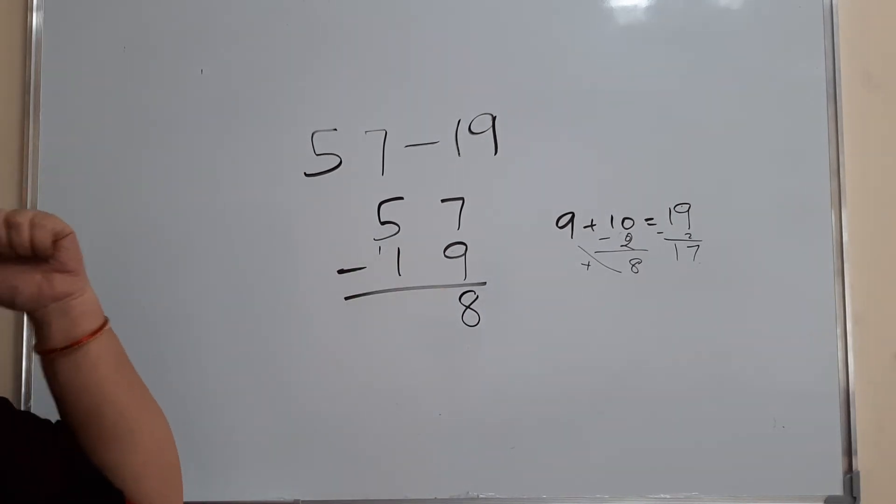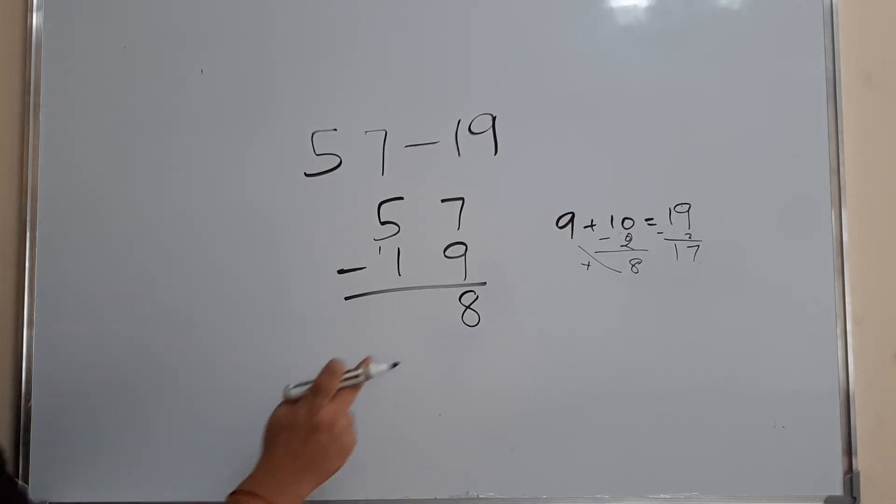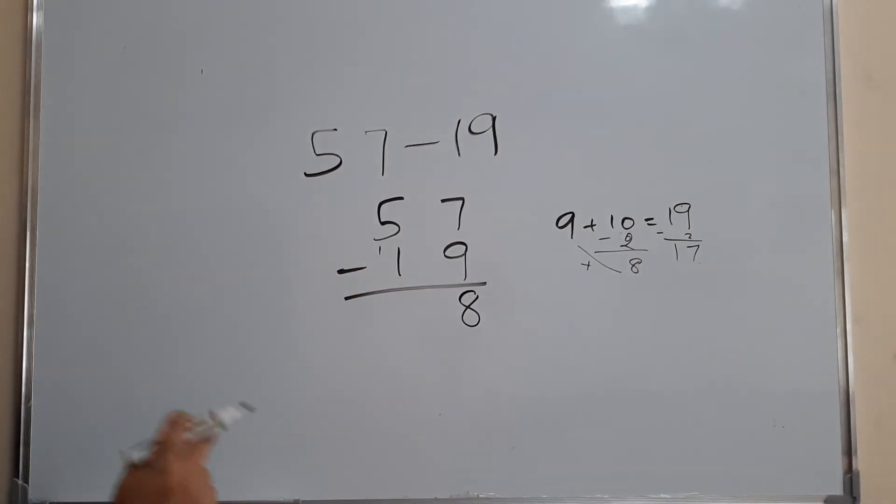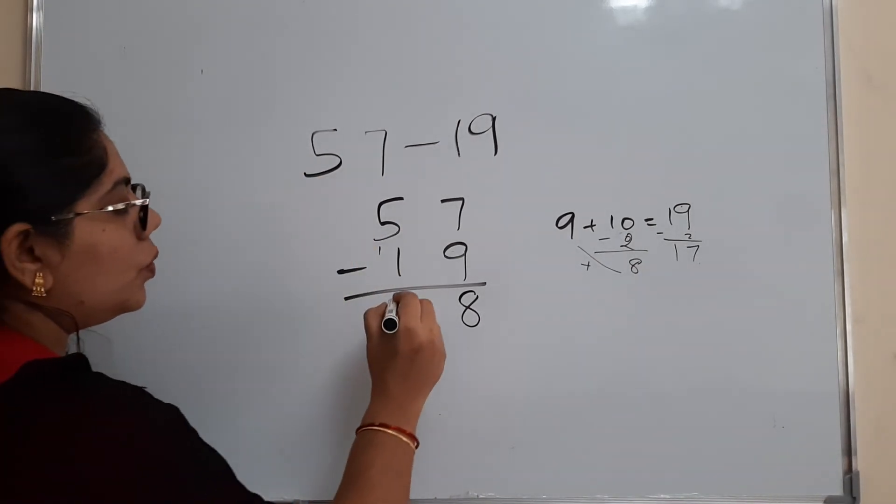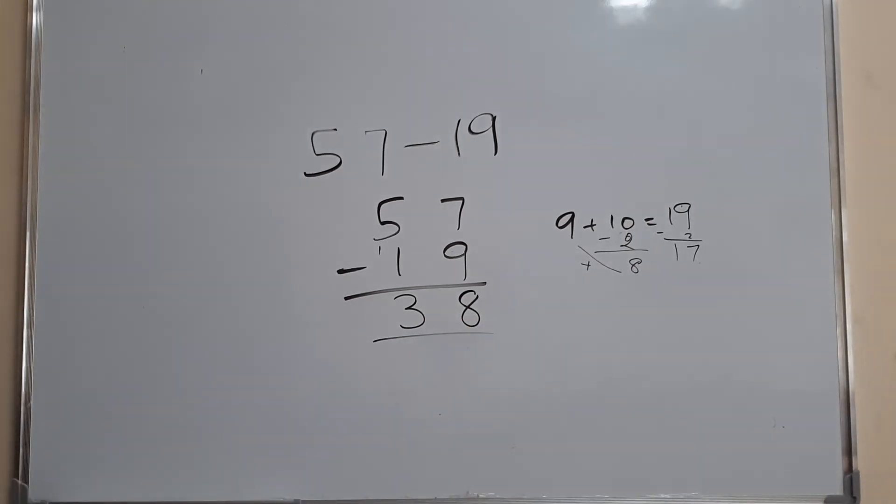By practice, actually, while doing, we will get it easily. So 8 plus 9 is 17, 1 here. Then 1 plus 1 equals 2. 2 plus what makes 5? 2 plus 3 makes 5. So our answer is 38.